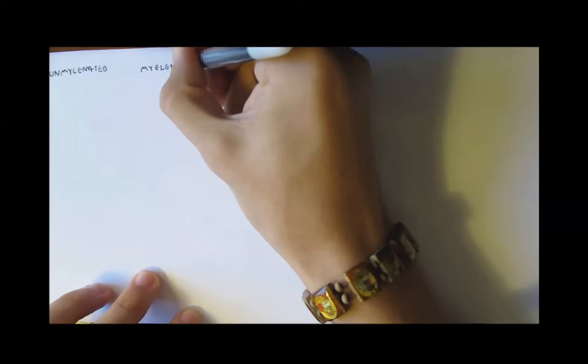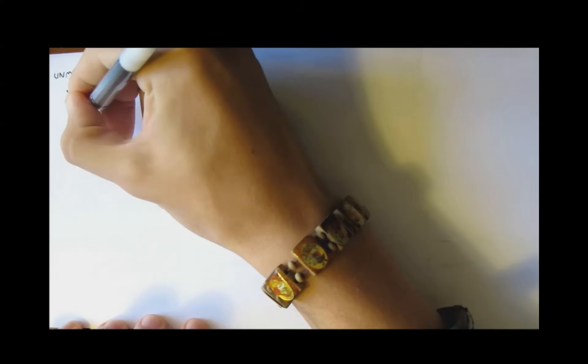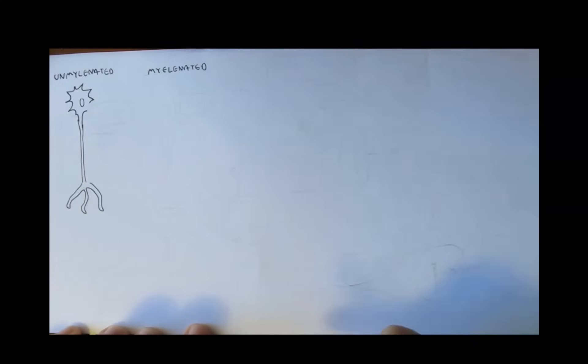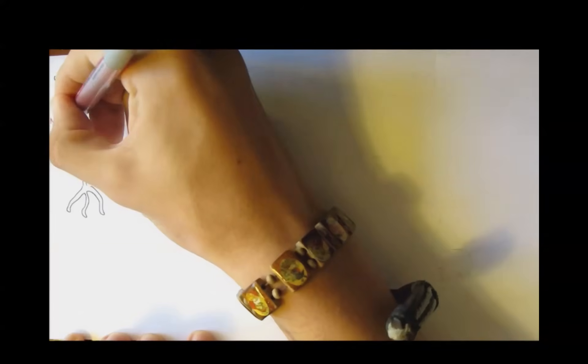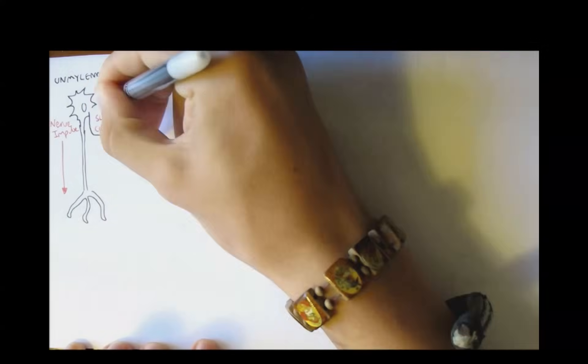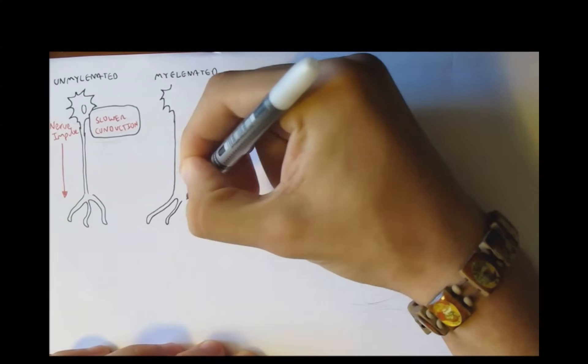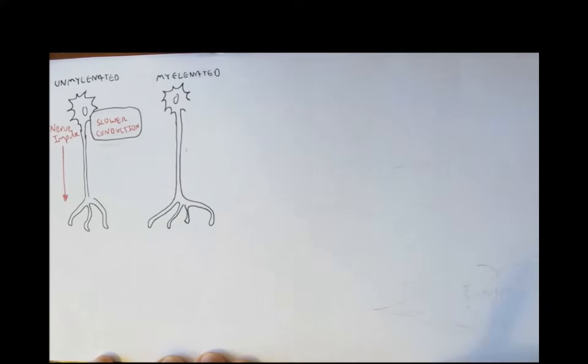Now, neurons can be also without Schwann cells, and when they are without Schwann cells, they're called unmyelinated neurons. The unmyelinated axon has a slower conduction and so sends signals much more slowly. Whereas the myelinated axon, it transmits impulses much faster.